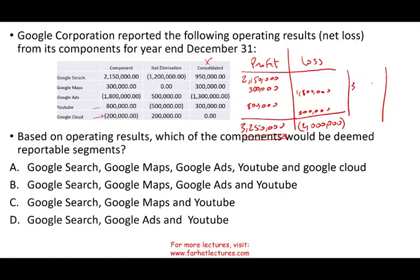The threshold is 325,000. I arrived at this by taking the greater of total profit or total loss in absolute value — which was the profit — and multiplying by 10%. Reportable segments are those that exceed this threshold. Google Maps is 300,000, which is below 325,000, so Google Maps is out. We can eliminate answer choices A and B because they include Google Maps. Google Search at 2,150,000 is clearly greater than 325,000 — included. Google Ads has 1.8 million in losses; looking at the absolute value, it exceeds 325,000 — included.